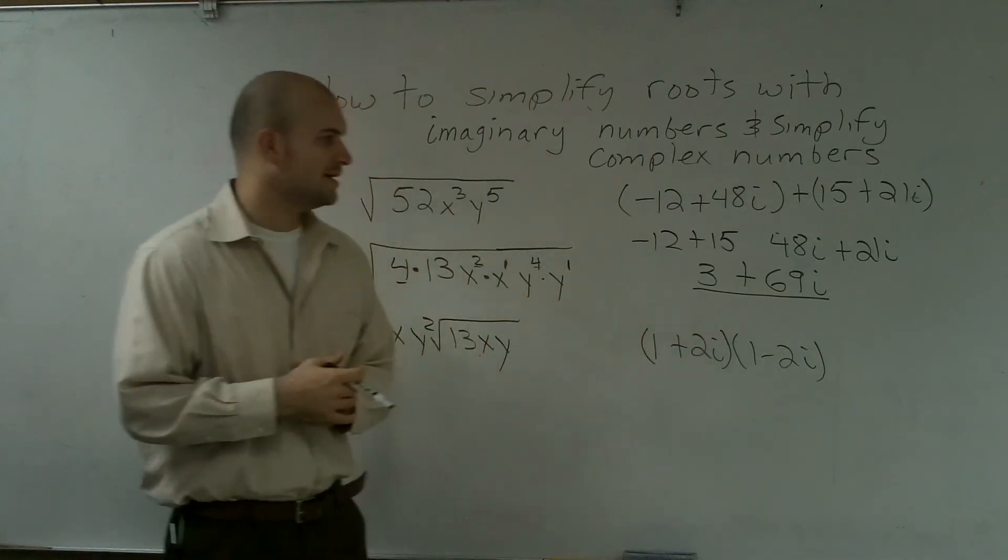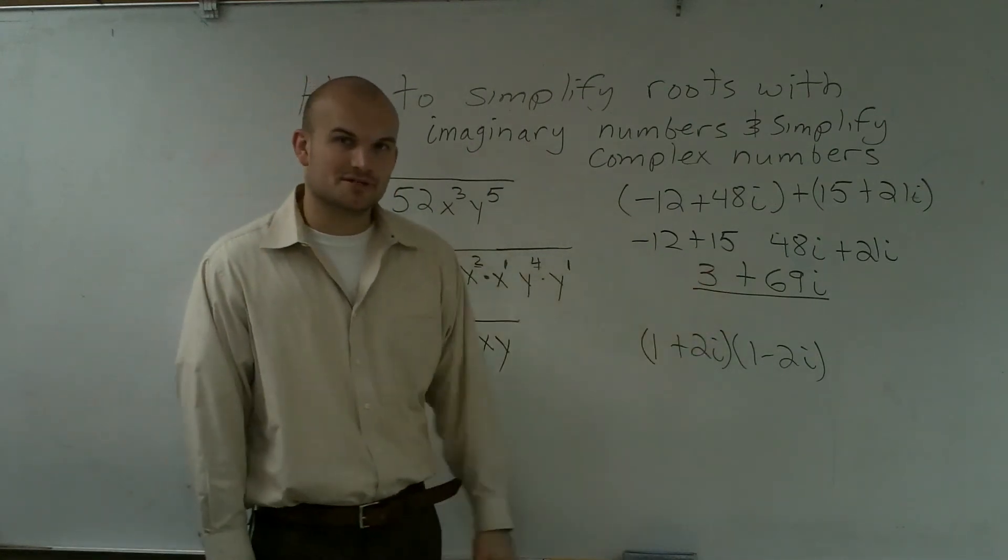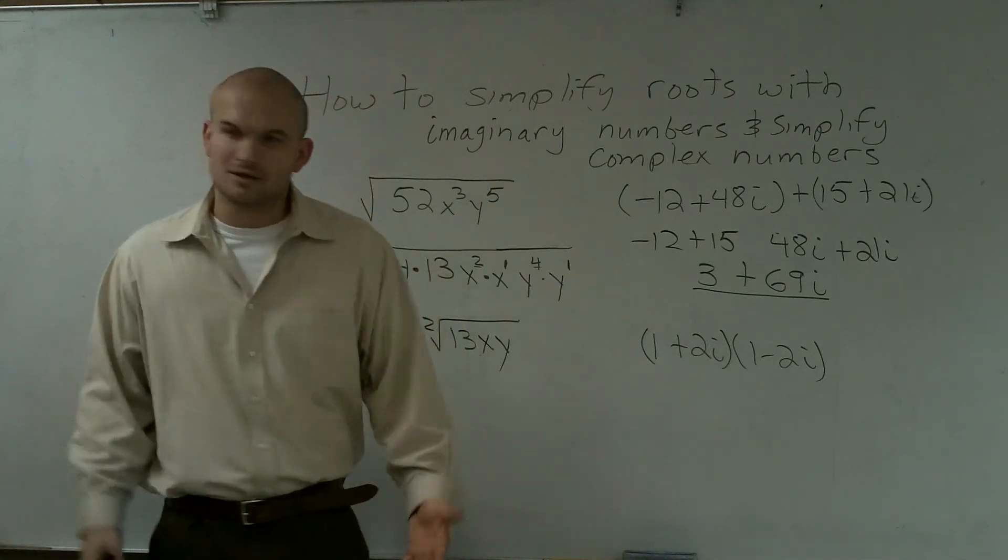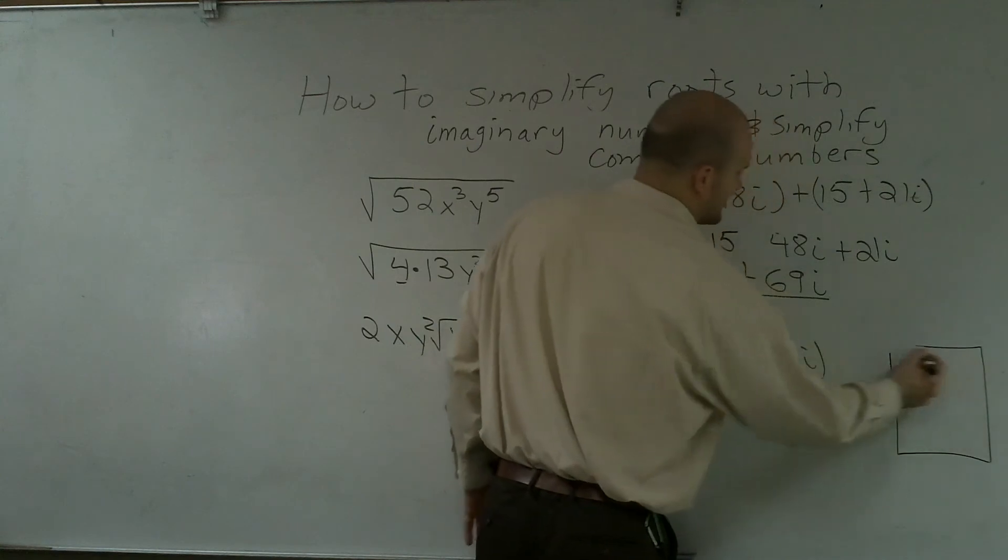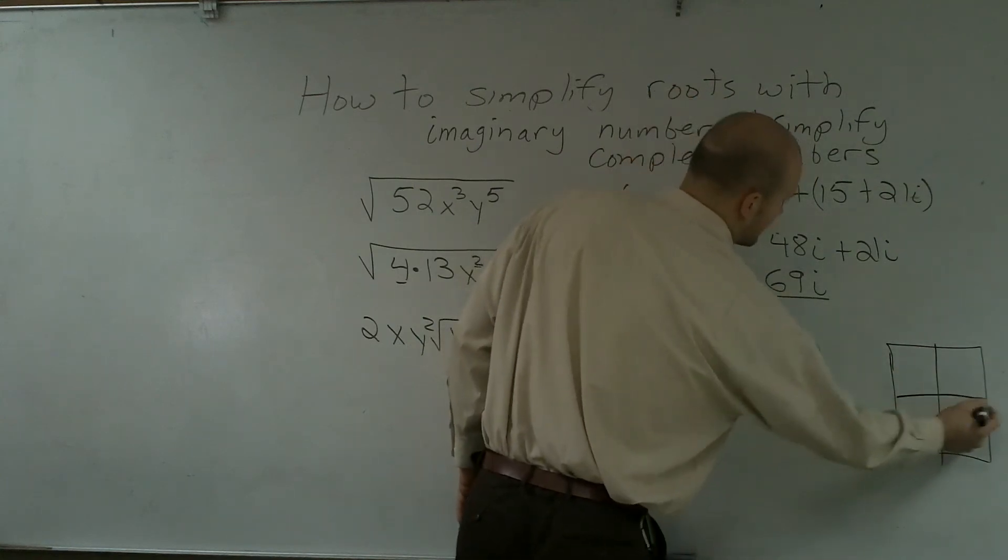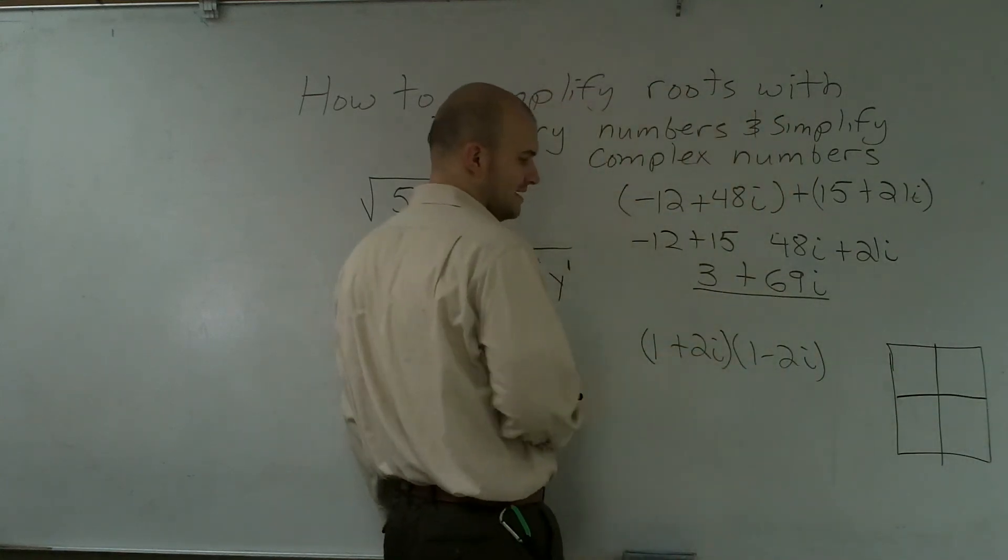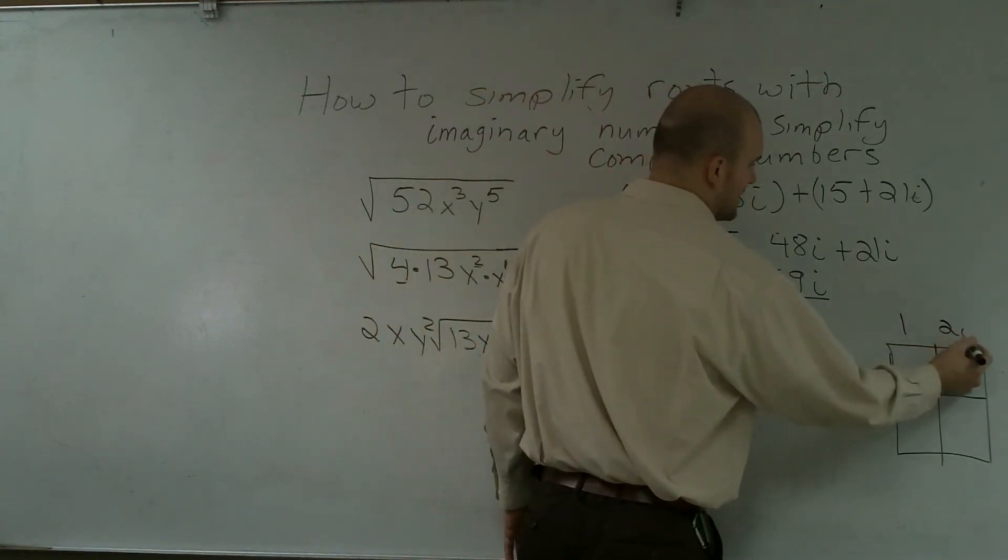Next thing, guys, when you're doing a problem like this, when you have two binomials, I've showed you guys multiple ways. There's FOIL. Another just very simple way is you could also do like the box method. You know, FOIL first, outside, inner, last. Here, you could just do 1 plus 2i, 1 minus 2i.